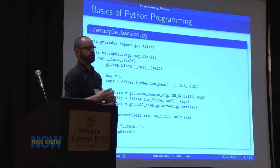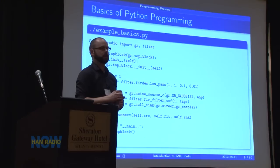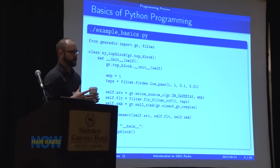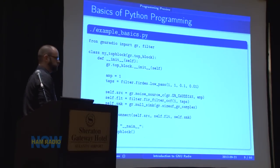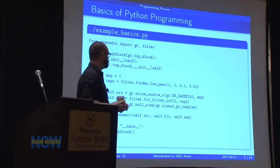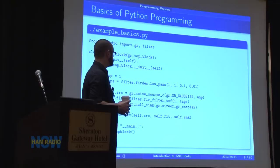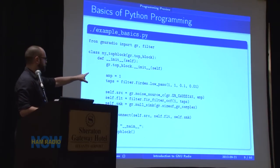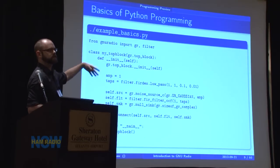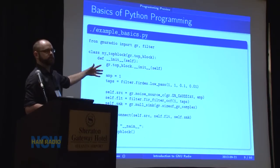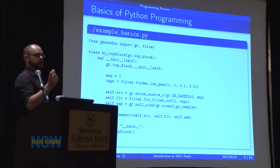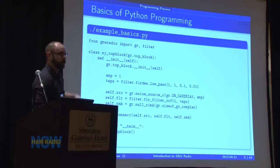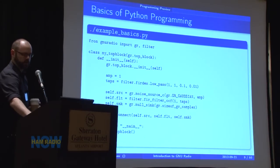The other thing to show is how we create those taps. We have a lot of tools for creating filters. This firdes — the FIR description tool — in this case generates a low pass filter. We'll go into a lot more detail about what those parameters mean, but you're defining the sample rate, the passband, and the transition bands between the end of the passband and the start of the stop band. All of that's encoded in there.